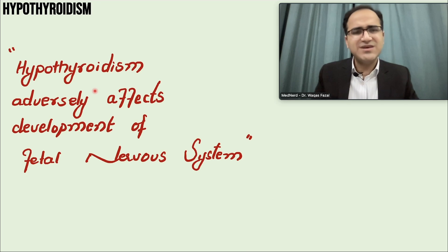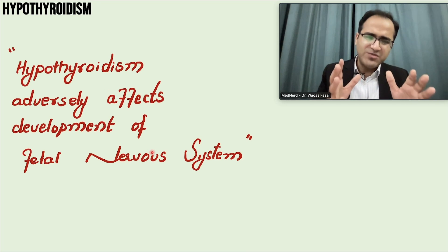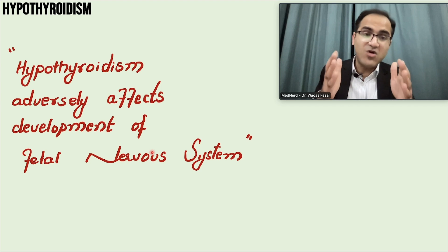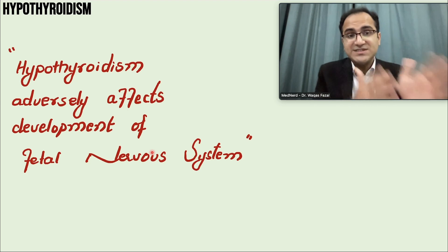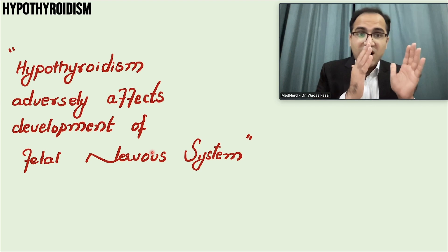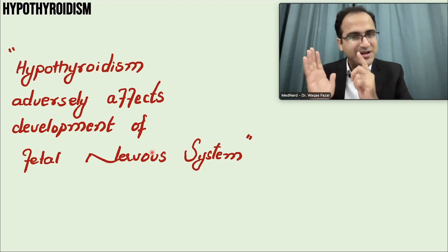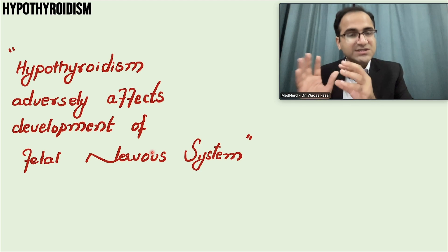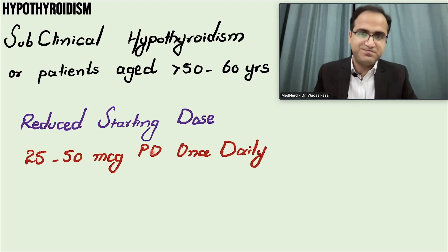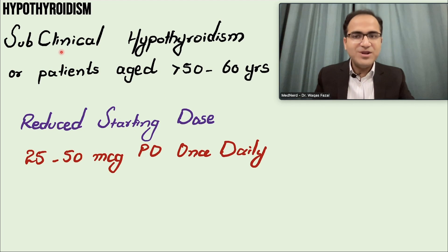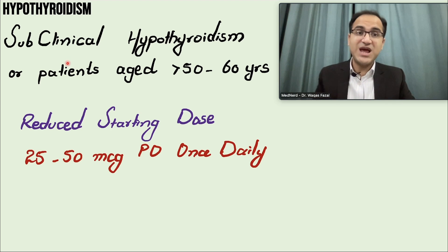Hypothyroidism adversely affects the fetal nervous system — this is a commonly tested exam point. If asked what is the effect of hypothyroidism on the fetal brain, the answer is that it decreases the development of the fetal nervous system.